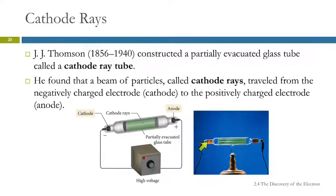So this beam of particles was called a cathode ray because it traveled from the cathode to the anode. The cathode has a negative charge, the anode has a positive charge. And it is a beam of particles.